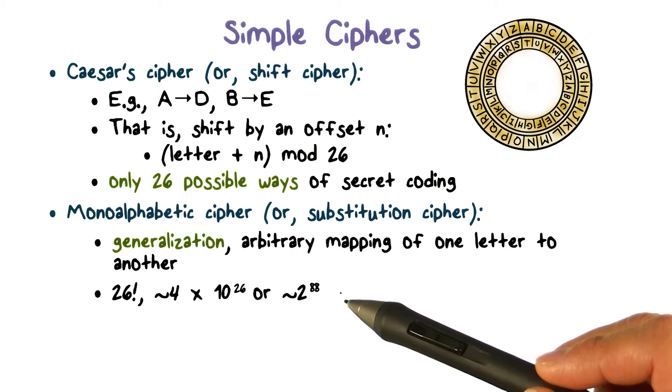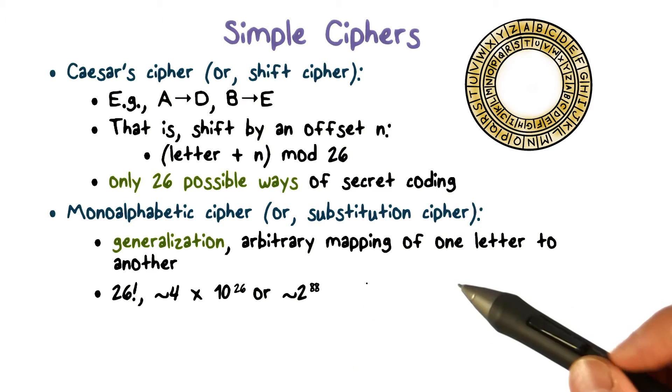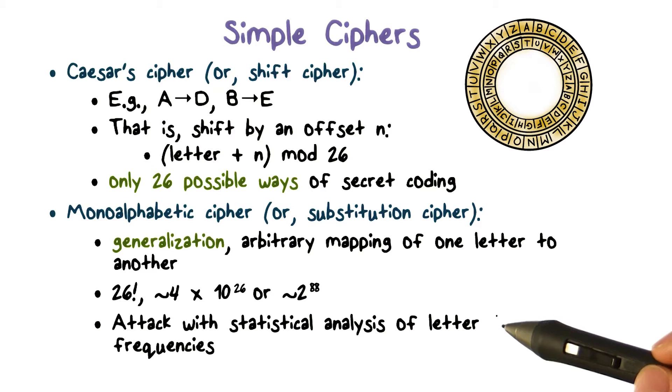In other words, this is a very huge number. If the attacker attempts to use brute force or just blindly search all the possible keys, it's going to take him long time because there are 2 to the 88 number of possible keys. So what should the attacker do instead? Instead of trying all possible keys, an attacker can analyze the statistical frequencies of letters to break the schemes.